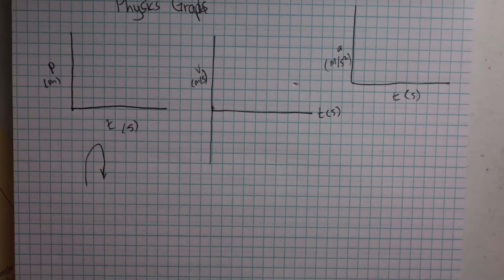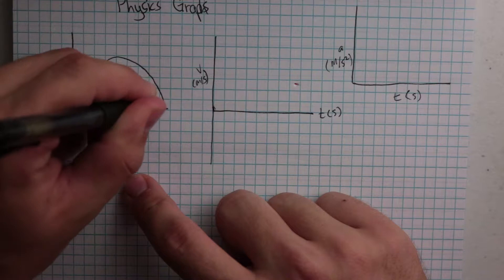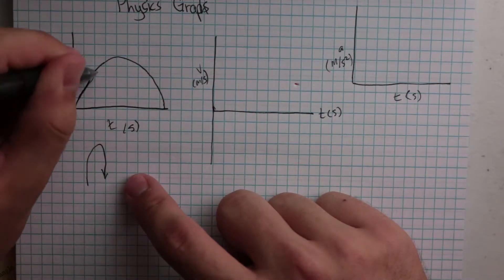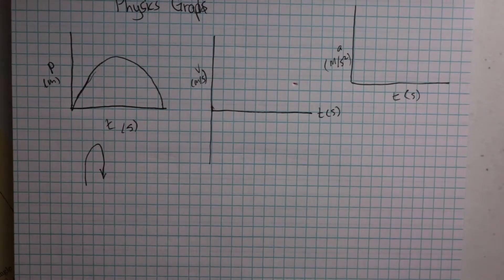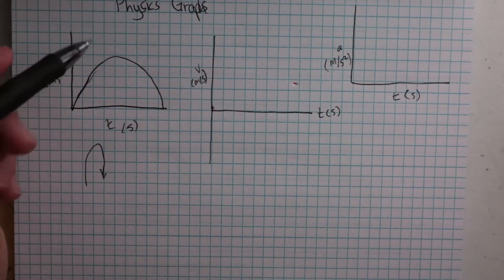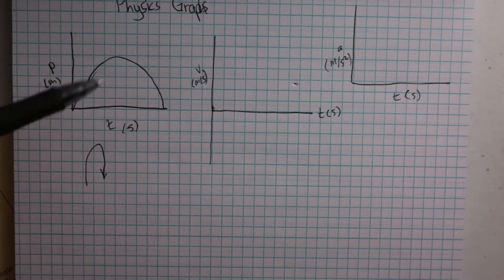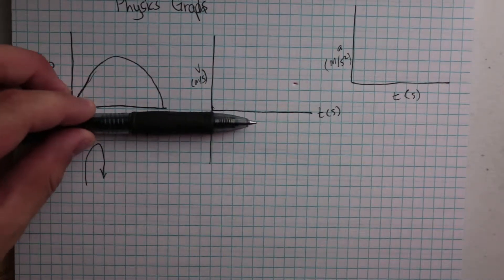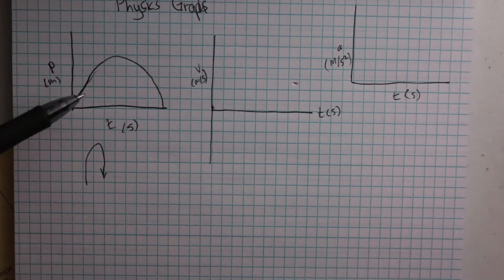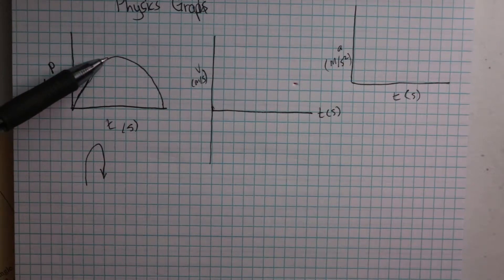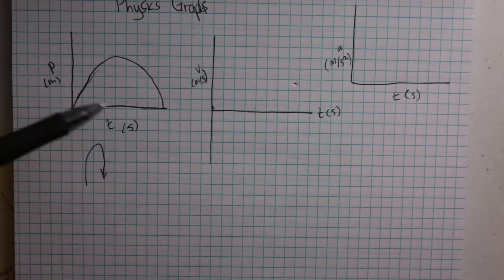This is what our position-time graph is going to look like - I throw the ball up and then it comes back down. This curve is in a parabolic arch because as the time goes on, its position changes less. When we throw an object up, it goes up, slows down, stops for a second, and then falls back down to where it started.